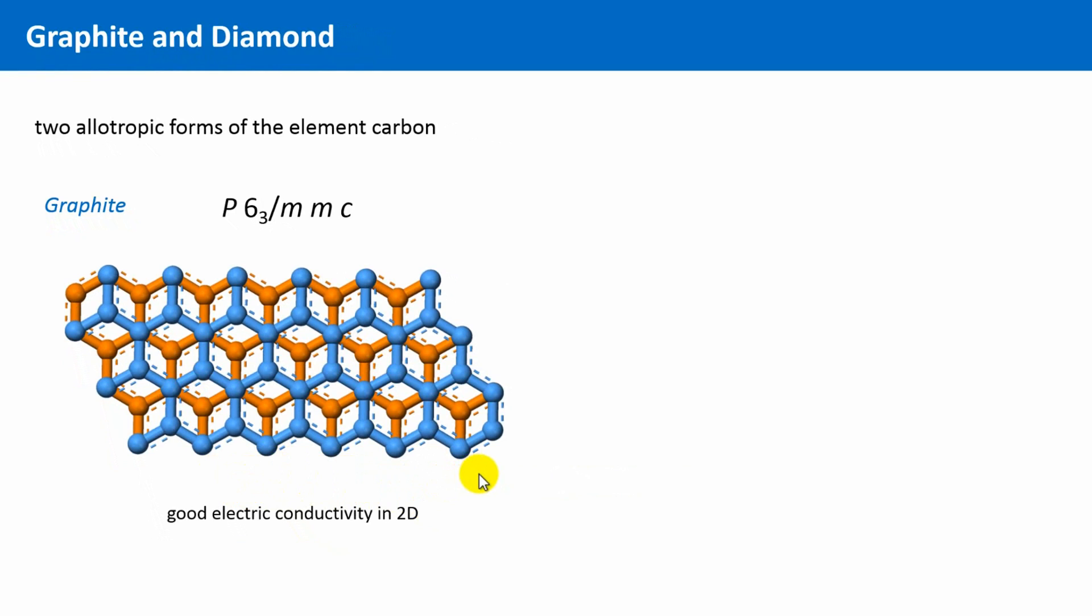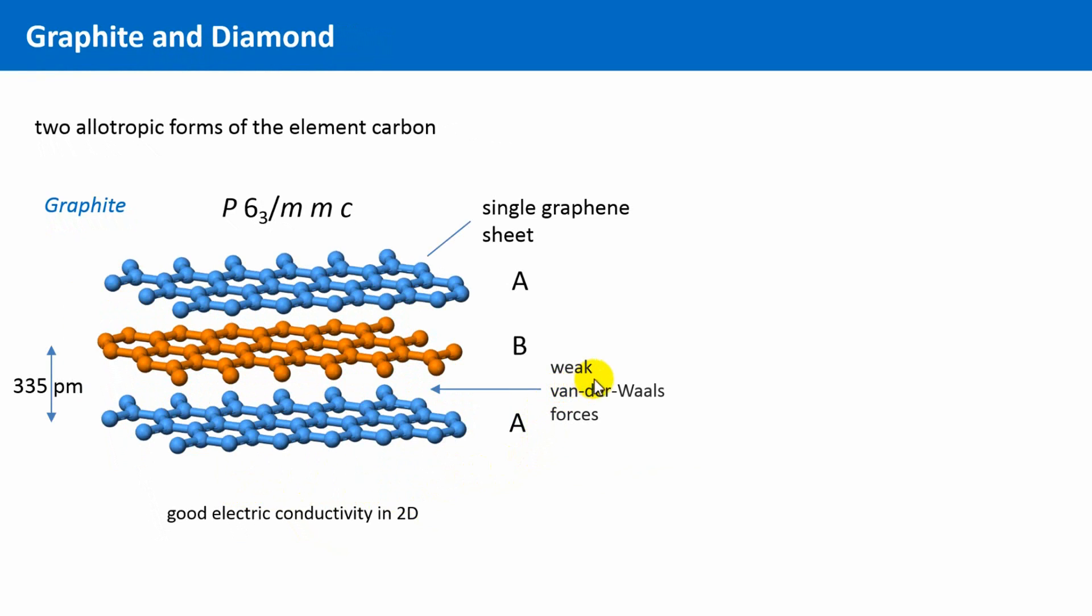This becomes immediately clear if we switch back to the other view. These layers are only loosely bound to each other by so-called Van der Waals forces, but not by covalent bonds. They are relatively far apart from each other. There is no direct link.